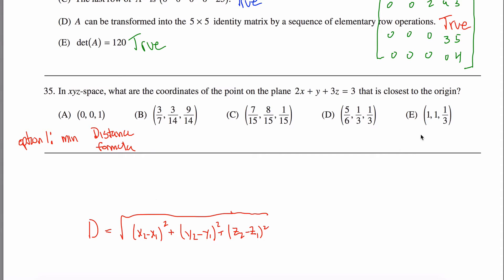You could figure out which of these points. You could do this a couple of ways. You could figure out which point minimizes this formula where x1, y1, z1 is the origin. You could figure that out, which point on this plane minimizes this.